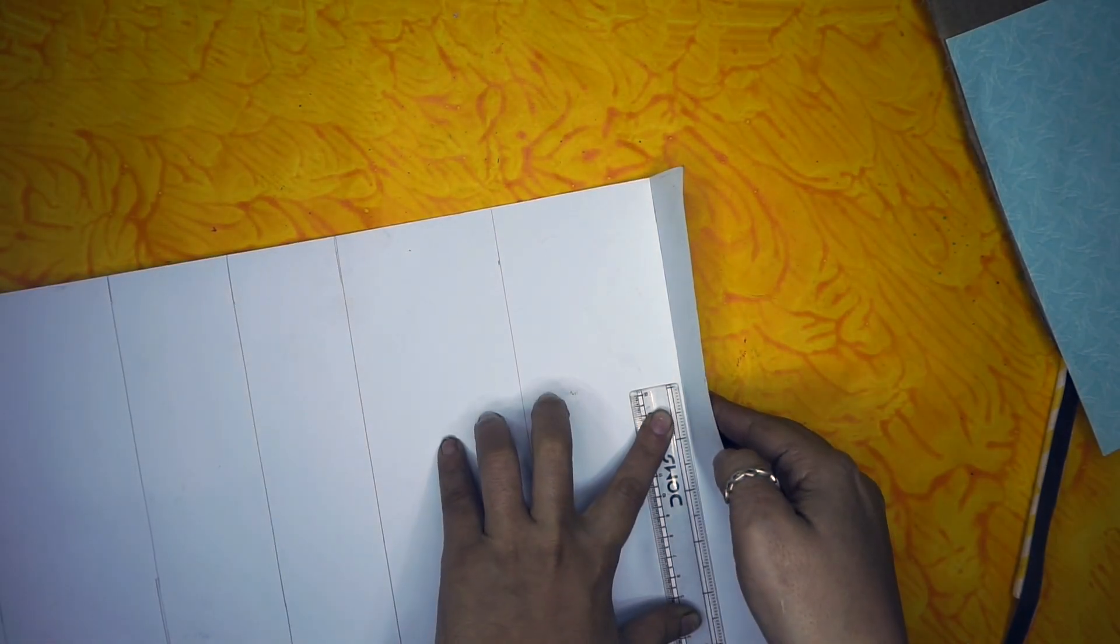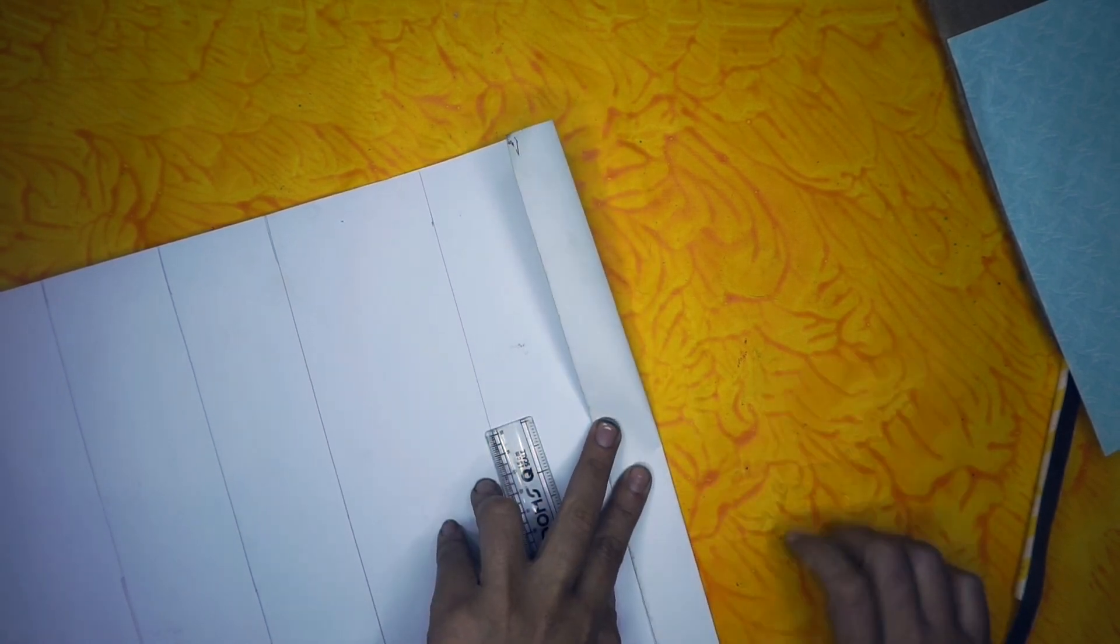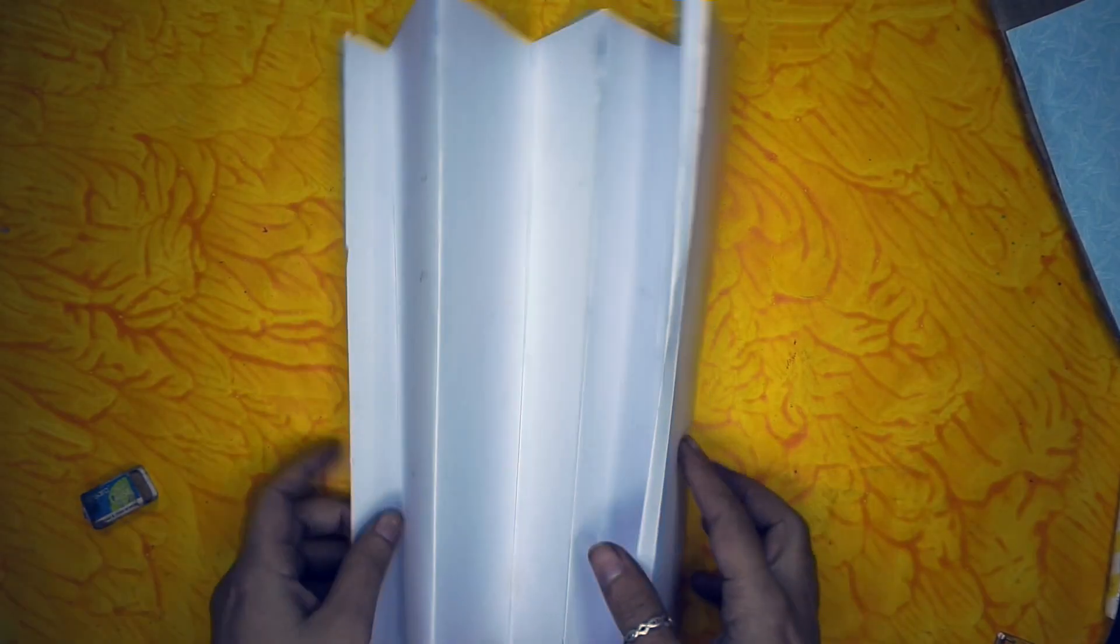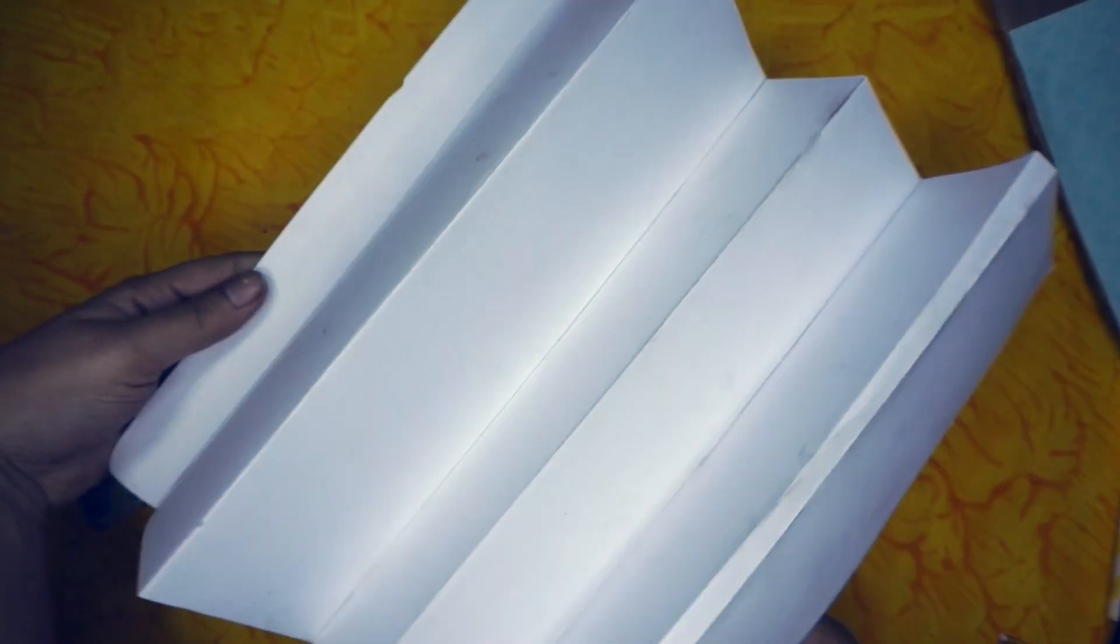After this, I have marked and folded A3 size sheet into 3 folds as we have to paste those three cutouts of our Republic Day picture.